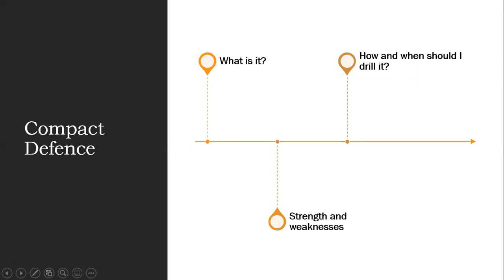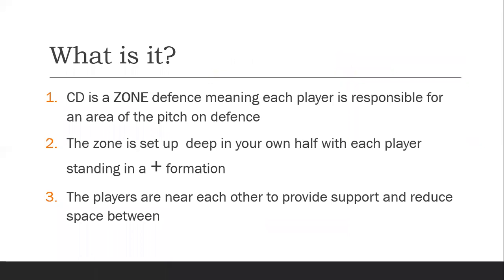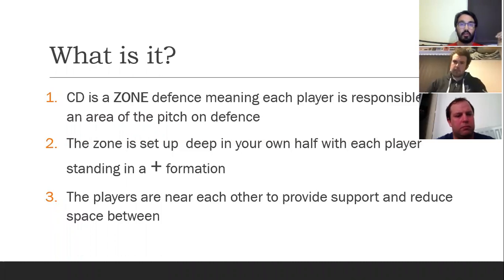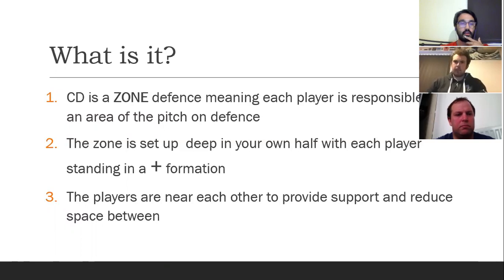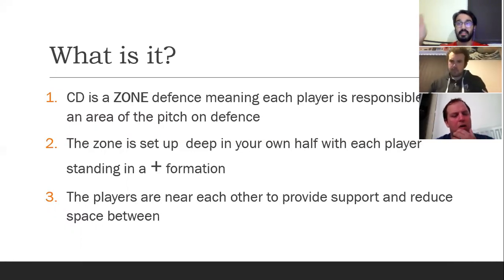We're going to cover compact defense — a compact zone as a certain type of zone. We'll go through what it is, its strengths and weaknesses, and how to drill it and when a team might decide that's what they want to be playing. A compact defense is a zone defense where each player is responsible for one part of the pitch. What makes it different is you're setting much closer to your own hoops and much narrower in terms of the width of the pitch, making your zone as close to a square around the hoops as you can.